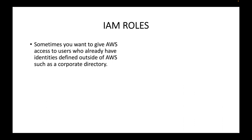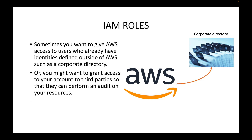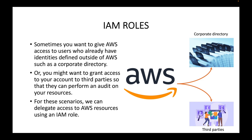Sometimes you might want to give AWS access to users who already have identities defined outside of AWS, such as your corporate directory. You can use IAM roles with SAML authentication or OAuth authentication to utilize that existing directory to control access to your AWS accounts. You might also want to grant access to third parties — for example, an auditing team that needs to audit your AWS resources.